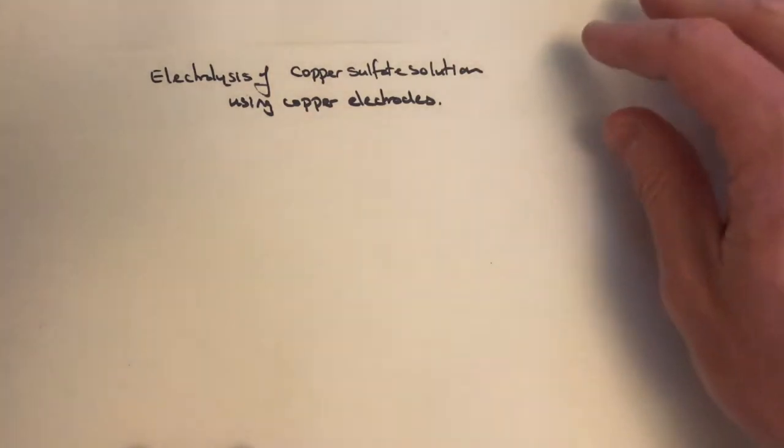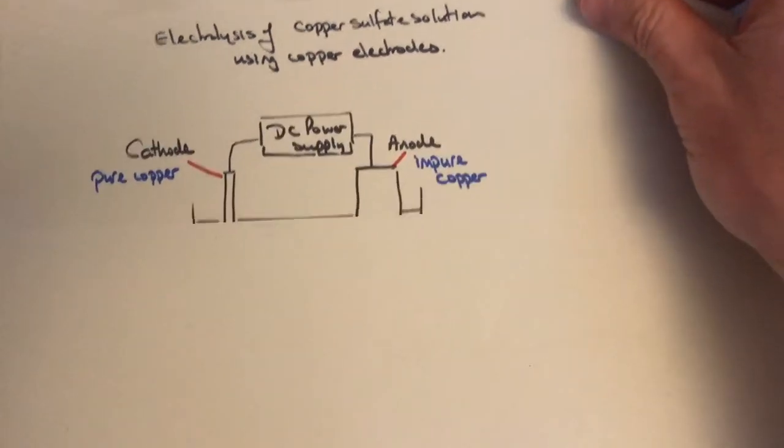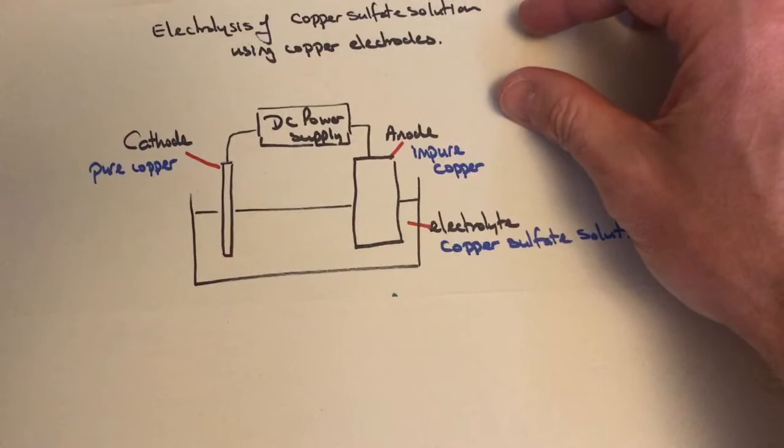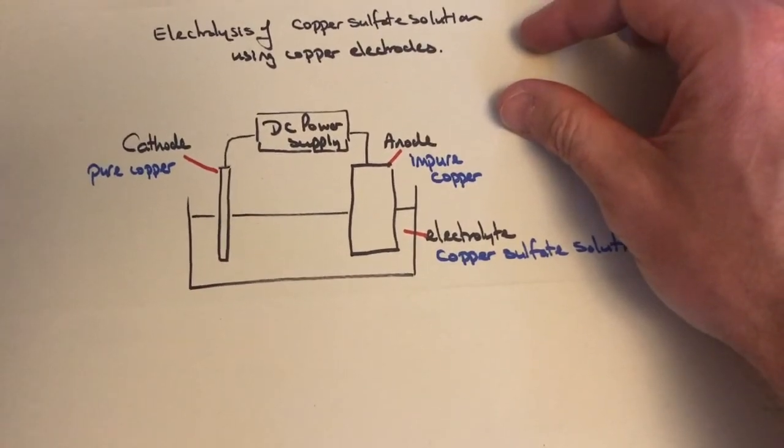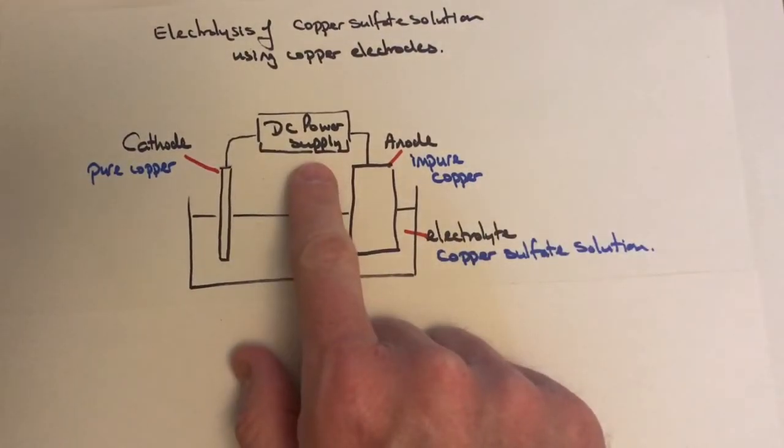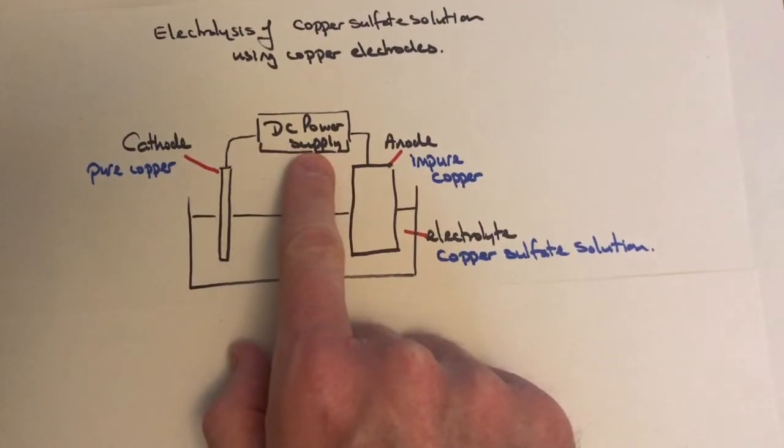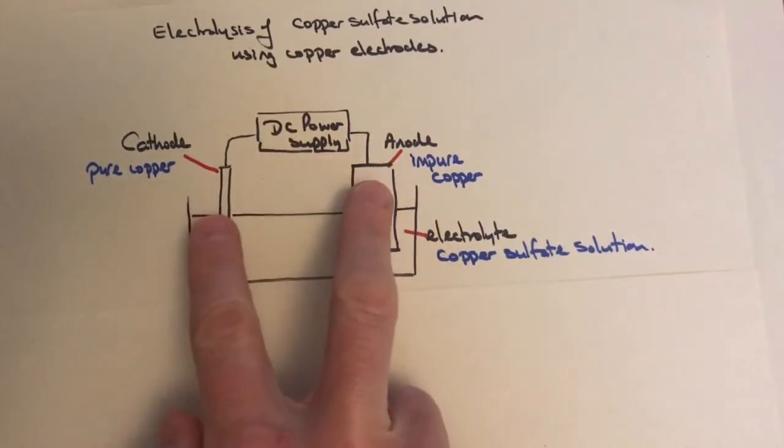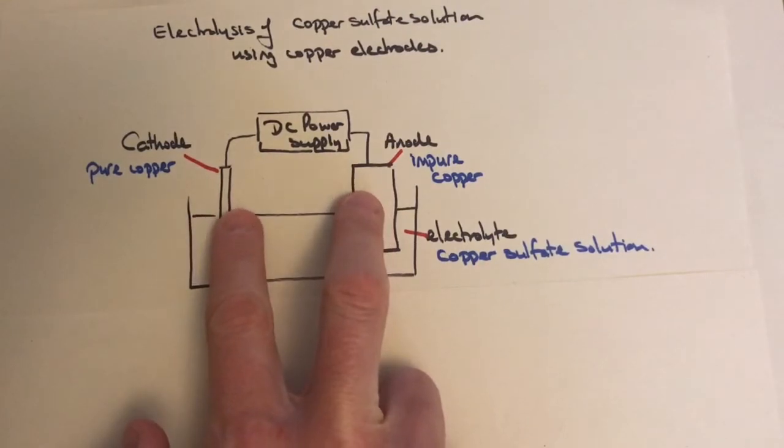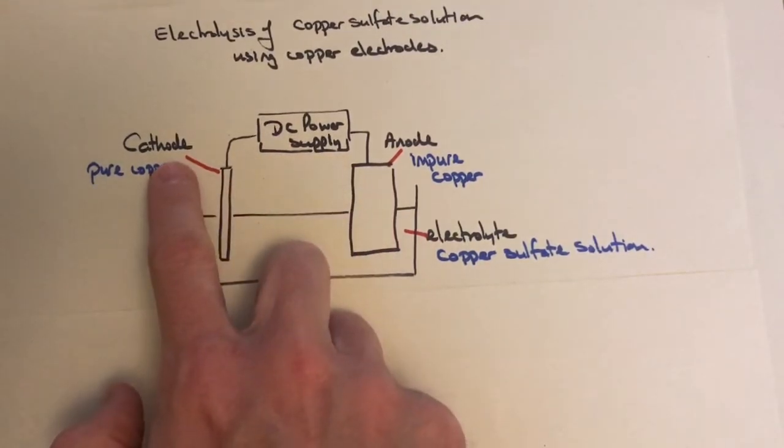How do we set this up? Here's our diagram showing the setup. We've got a DC power supply because to do electrolysis we need DC—direct current—to make it work.